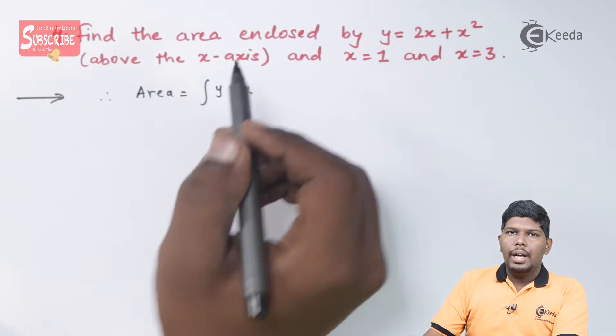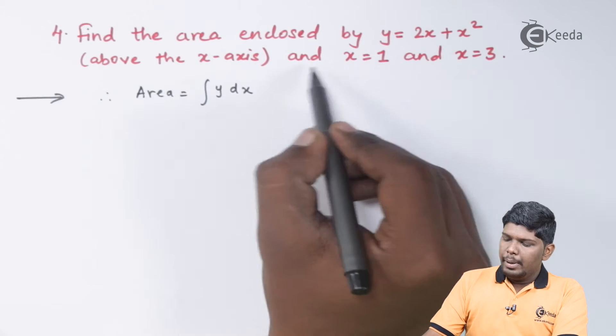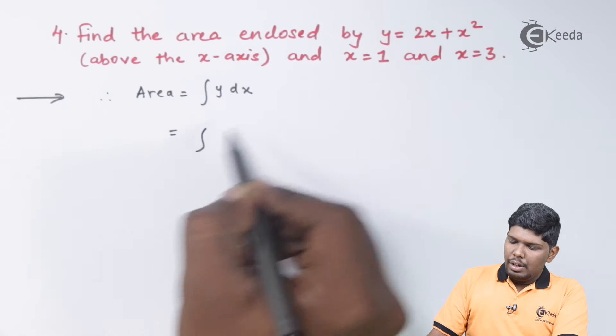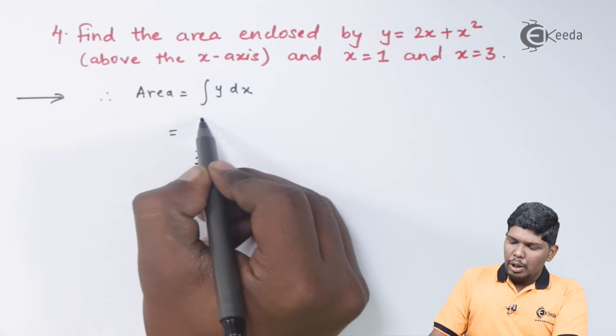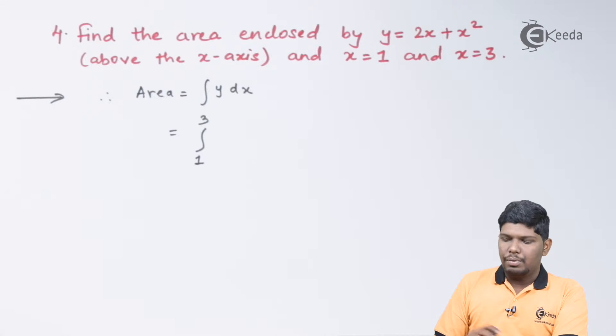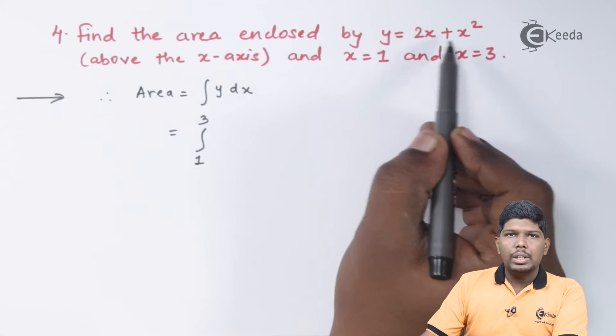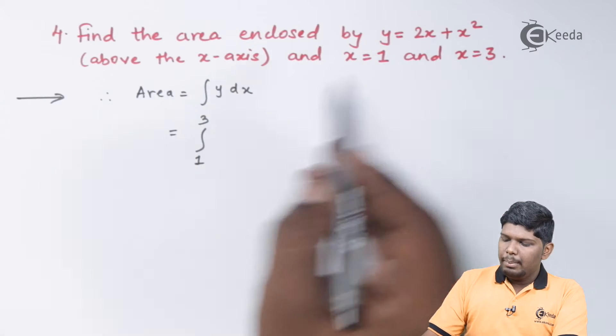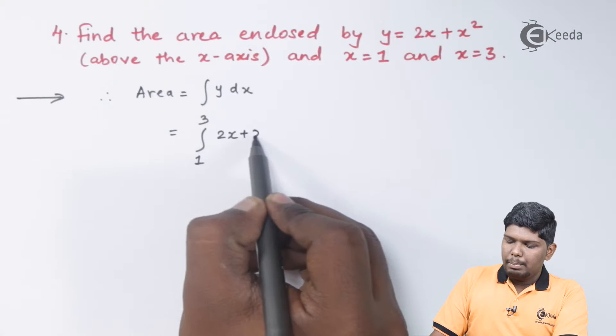Therefore, area will be equal to integral y dx and the limits of x will be from 1 to 3. The value of y we can pick from the given curve. So the given curve is y equals 2x plus x square.